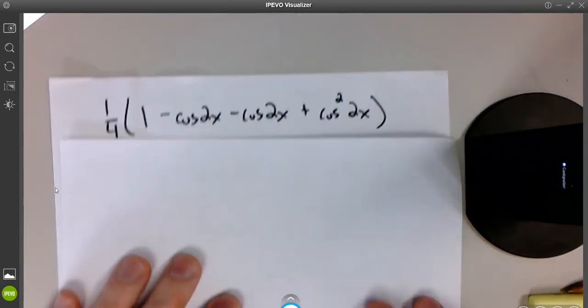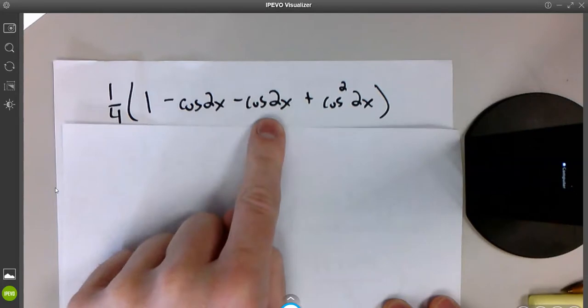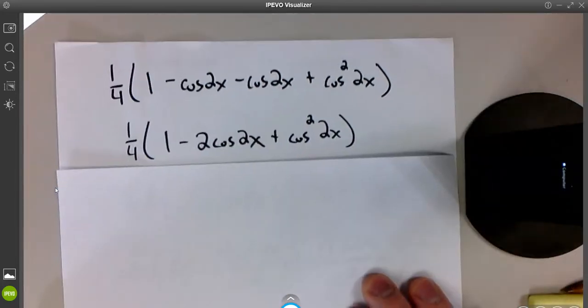And we'll get this thing. First, outer, inner, last. Okay. I see some like terms, a minus cosine 2x and a minus cosine 2x is a minus 2 cosine 2x. Not too bad.